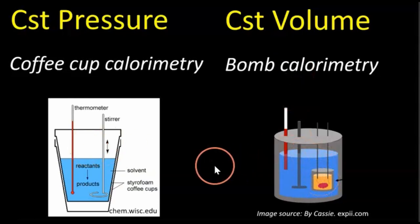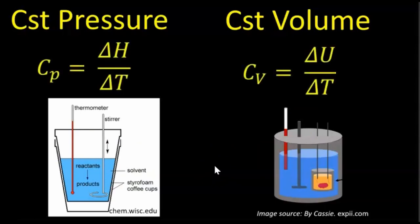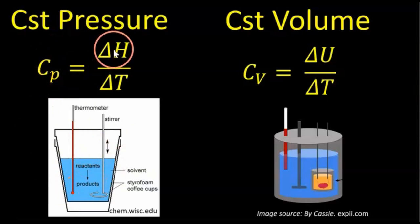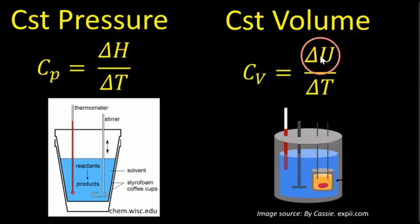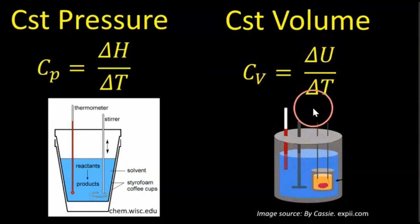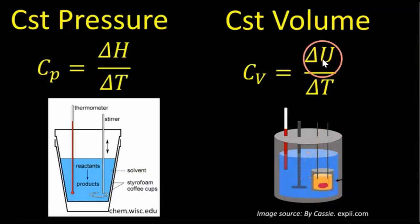These two different types are important because the calculations are slightly different. The heat capacity of the calorimeter under constant pressure equals the change in enthalpy divided by the change in temperature — heat is enthalpy here because it can do work against the surroundings. Under constant volume, the heat capacity equals the change in internal energy over the change in temperature. This rigid container can't do any expansive work, so all heat transfer goes directly to the change in internal energy.